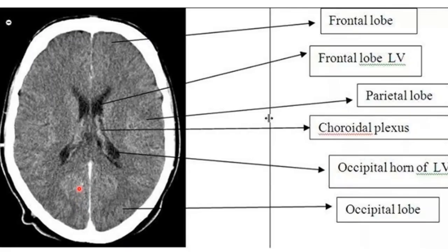On this image, as a revision of anatomy, you can appreciate the frontal lobe, and going down, the frontal horn of the lateral ventricle, the temporal horn of the lateral ventricle, and the occipital horn of the lateral ventricle. Between the lateral ventricles you can also appreciate the choroid plexus. The fibrous dural septum called the falx cerebri is also appreciable on this image.